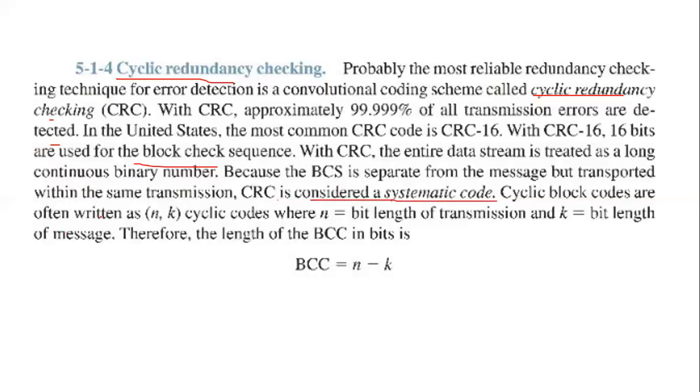CRC is considered a systematic code. Cyclic block codes are often written as N comma K cyclic codes, where N is the bit length of the transmission and K is the bit length of the message. Therefore, the length of the BCC in bits is N minus K.